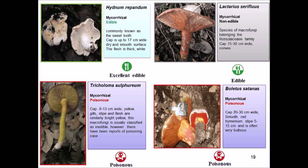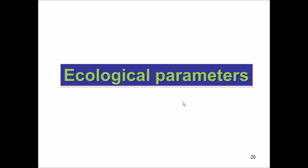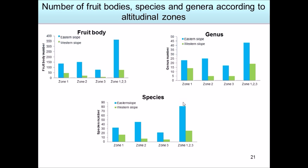Let's look at the effect of ecological parameters on the distribution of macro fungi species. I examined whether slope exposure and altitude affect the number of fruiting bodies, genera, and species. There is an increase in zone two for fruiting bodies, genera, and species, with more fruiting bodies on the eastern slope than the western slope, explained by the eastern slope containing more tree species and being more humid.